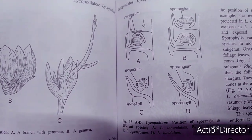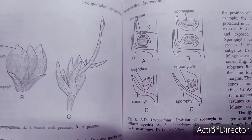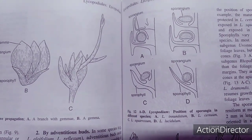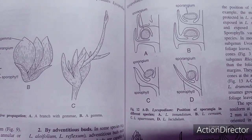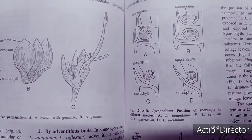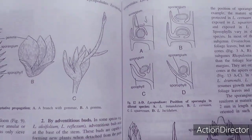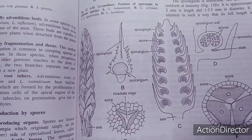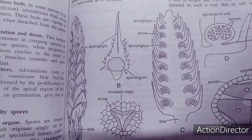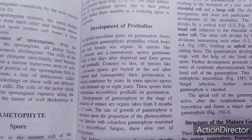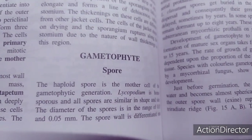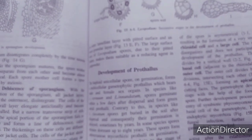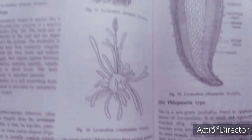The strobilus bears the sporangia. The shape of the sporangium is kidney-shaped — a very characteristic feature of Lycopodium. Sporophylls occur at the apex of branches. Sporangia remain adaxial and are found near the base of the sporophyll. Spore mother cells produce spores in tetrad formation, and the haploid spore develops into a prothallus, representing the gametophytic phase.